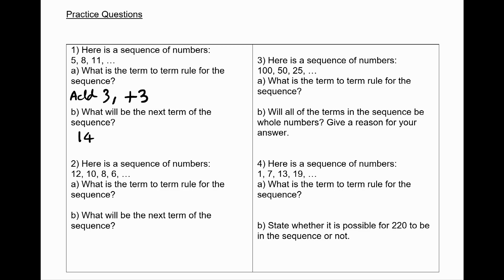Question 2, the term-to-term rule is actually a subtract. We're taking away 2 every time, so we could say subtract 2 or take away 2 in symbols. The next term therefore will be 6 take away 2, which is 4.